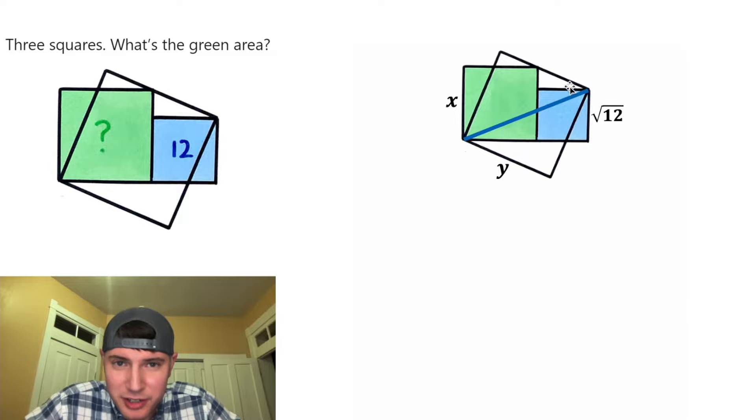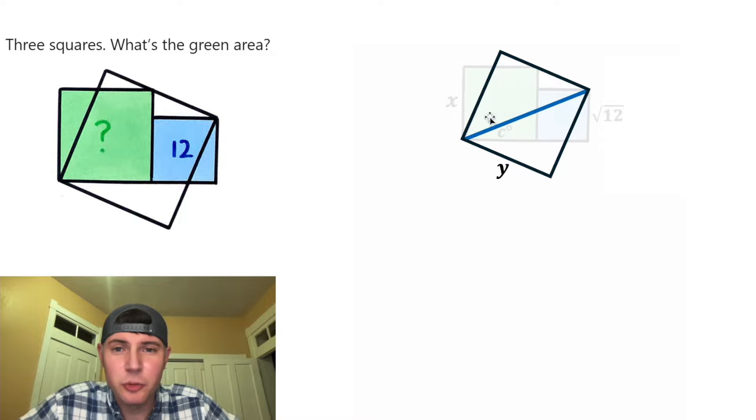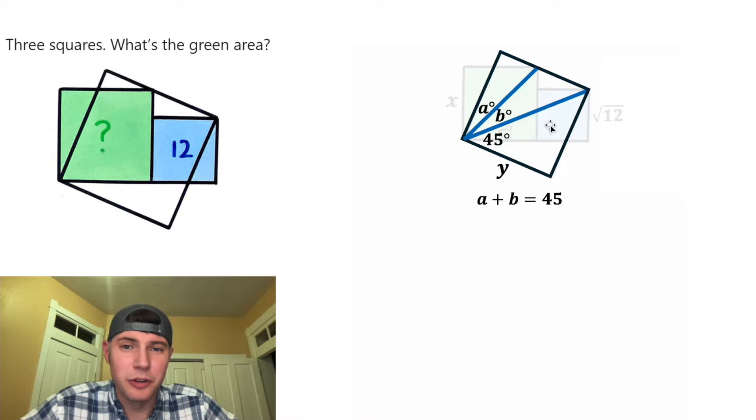Next, let's construct the diagonal of the larger square and the diagonal of the green square. And let's label these angles A, B, and C degrees. First, let's focus on A and B. This diagonal splits this larger square, which means it's breaking this angle up into two 45s. That means that A plus B is going to be equal to 45.